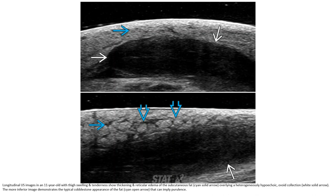This is an ultrasound image in an 11-year-old with thigh swelling and tenderness. There is thickening and erythema of the subcutaneous fat. A heterogeneously hypoechoic overall collection is seen. The more inferior image demonstrates the typical cobblestone appearance, which can imply cellulitis.